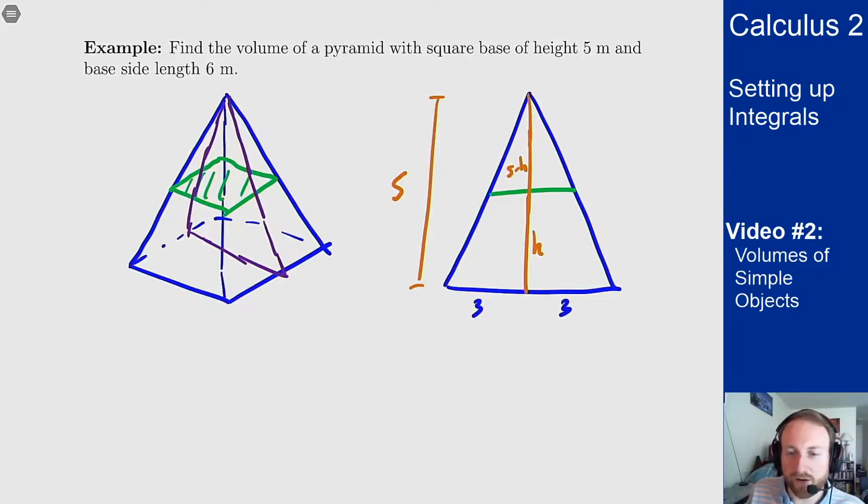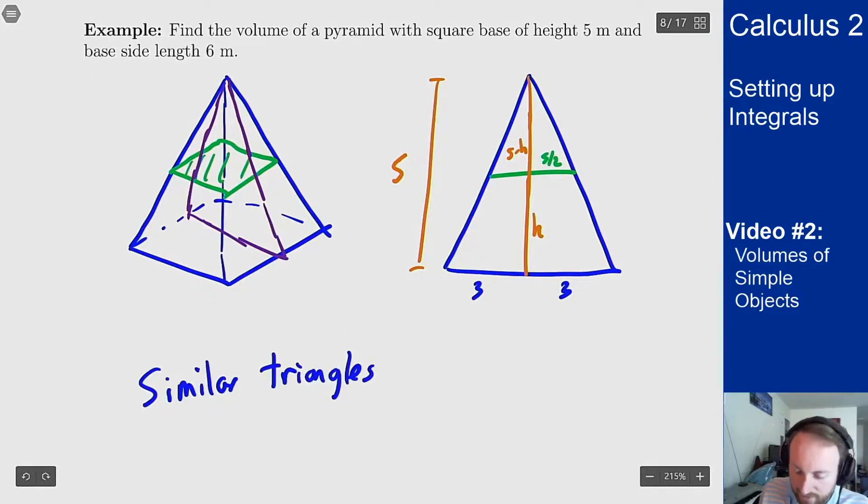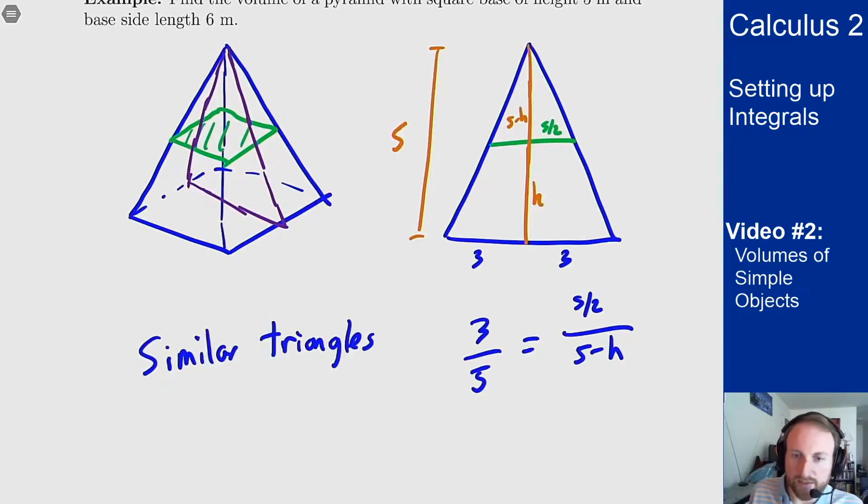If I want to find the area of that green square, I need its side length. Well this here is going to be s over 2 for the square and I can now use similar triangles to figure out what that number has to be. So similar triangles tells me that 3 over 5 equals s over 2 over 5 minus h. I then want s in terms of h because my integral is going to be a dh integral, so I need s in terms of h to figure this out.